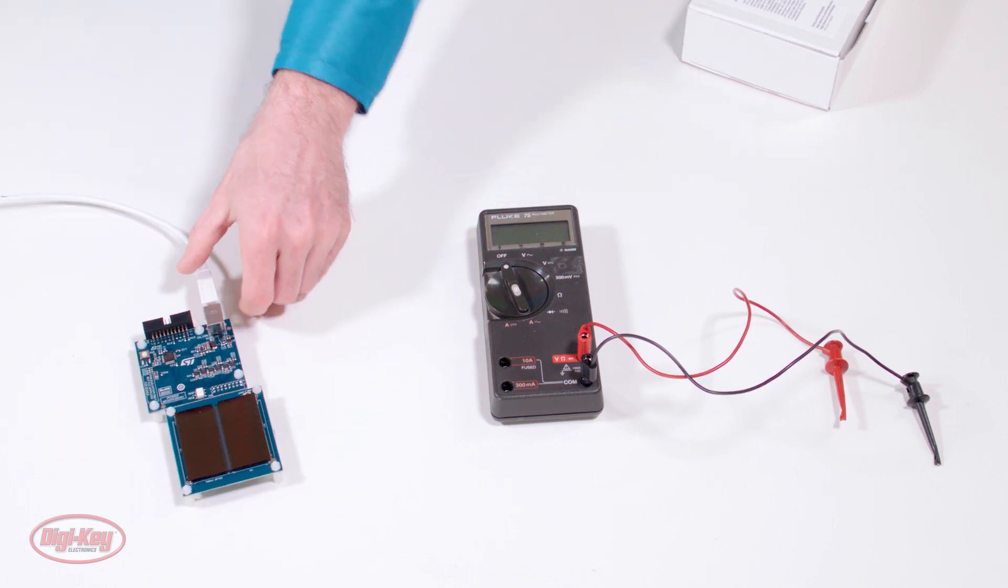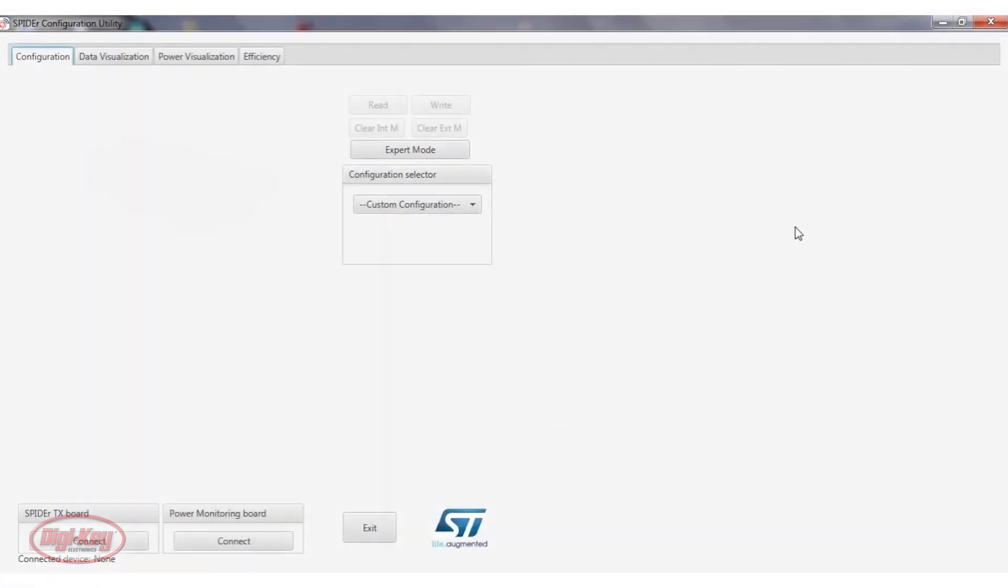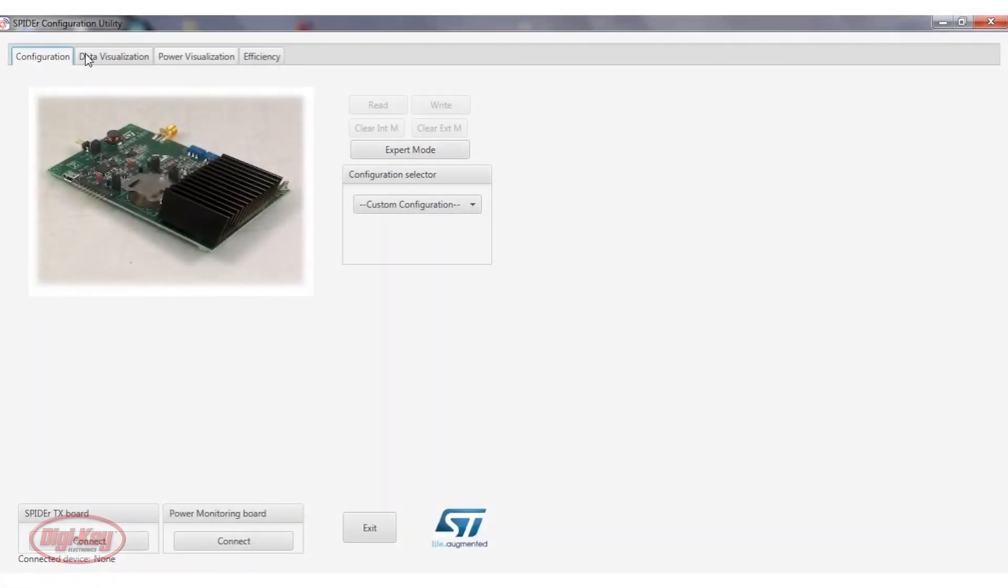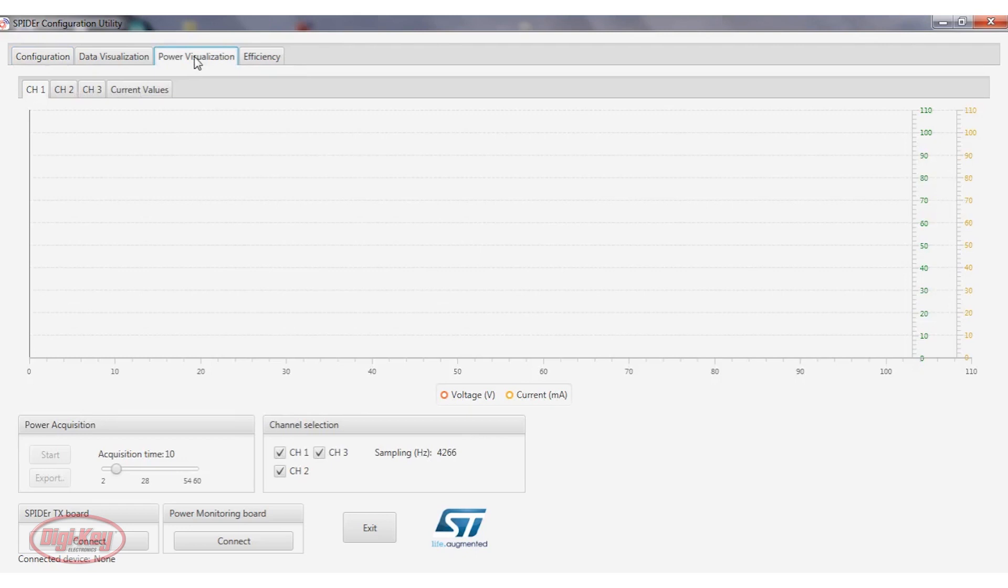And we'll pull up the GUI. So I have the GUI pulled up, and there are four tabs here. This GUI is actually designed to work with multiple demonstration boards. Because of that, not all the tabs work for this particular demo board. So we're only going to look at the power visualization tab here, and it monitors three channels.